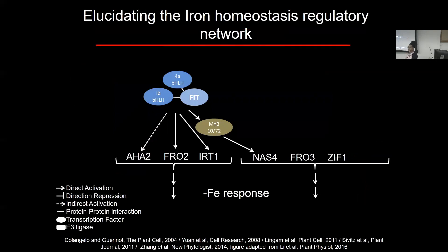When I started working on this project as a postdoc, we knew that FIT was a key bHLH transcription factor that controlled the activity of three genes: AHA2, FRO2, and IRT1. I was interested in figuring out what are some of the other key players in regulating the iron deficiency response.